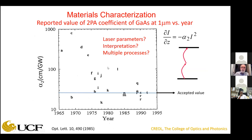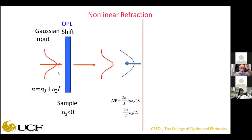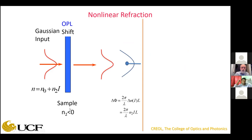Usually when you have two-photon absorption, there can be other processes occurring. One of those is nonlinear refraction. Nonlinear refraction: come in with a Gaussian beam, and if the index of refraction depends upon the irradiance, you'll have n = n₀ + n₂I. Let me choose a sample where n₂ is less than zero.